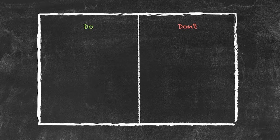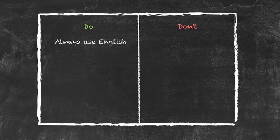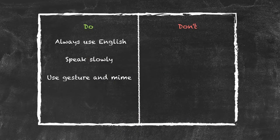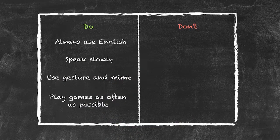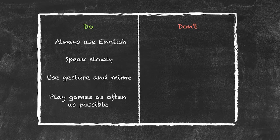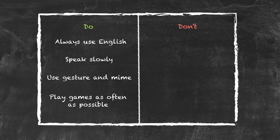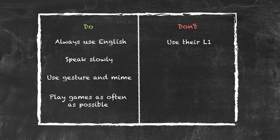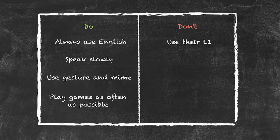Always use English as the language of instruction. Speak slowly and reduce teacher talk time by using gesture and mime as often as possible. Play games as often as possible — interactive, communicative games with an educational purpose. Don't use their native language; as soon as students know you understand it, they'll sit and wait for you to use it instead.